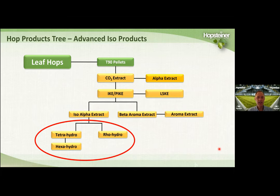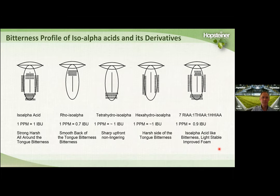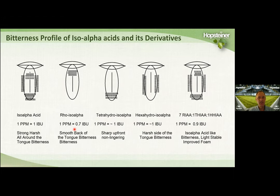All these hop acids have a different bitterness profile associated with them. Iso-alpha acids have a kind of strong, harsh, all-around-the-tongue type of bitterness. Rho has a smooth, back-of-the-tongue bitterness — about two-thirds as bitter as iso-alpha acids, the same as humulinones. Tetrahydro iso-alpha acid contributes about one IBU of organoleptic bitterness per ppm, with a sharp, upfront, non-lingering bitterness. Hexa has a kind of harsh, all-around-the-tongue type of bitterness as well.